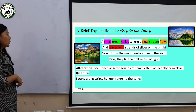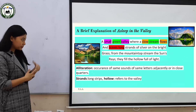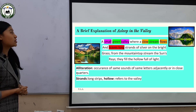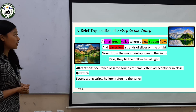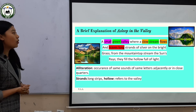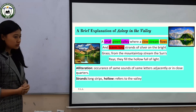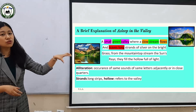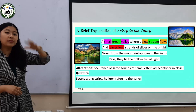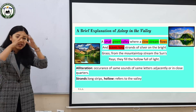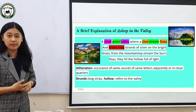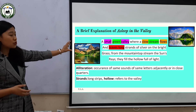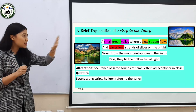Now let me read the poem first: 'A small green valley where a slow stream flows and leaves long strands of silver on the bright grass. From the mountain top stream the sun's rays — they fill the hollow full of light.' The poet is giving the description of a green valley where a silver stream is slowly flowing, and above the mountain there is a resplendent sun beautifully shining, radiating its rays and keeping the entire valley warm. In this first quatrain he gives a rich description of bountiful, beautiful nature, and the tone is happy.